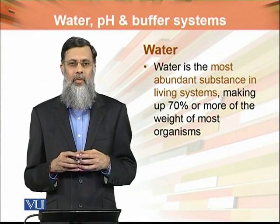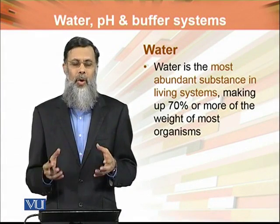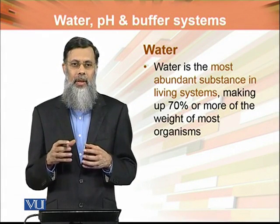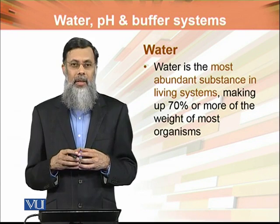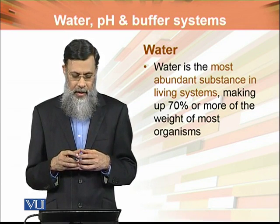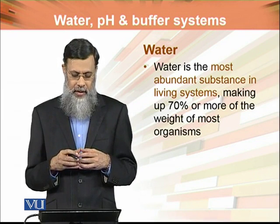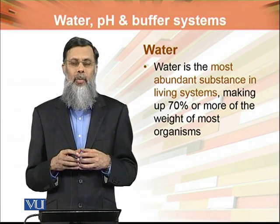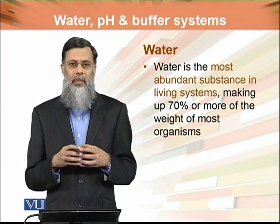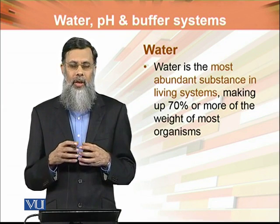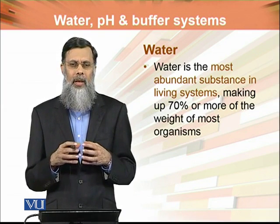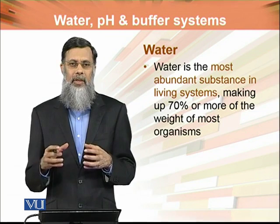Water pH and buffer system. We will start with the water. What is water? As we know, water is made of two hydrogen and one oxygen. Water is the most abundant substance in the living system, making around 70 percent or more of the weight of most organisms. For example, in adult human beings, it is around 55 to 65 percent water.